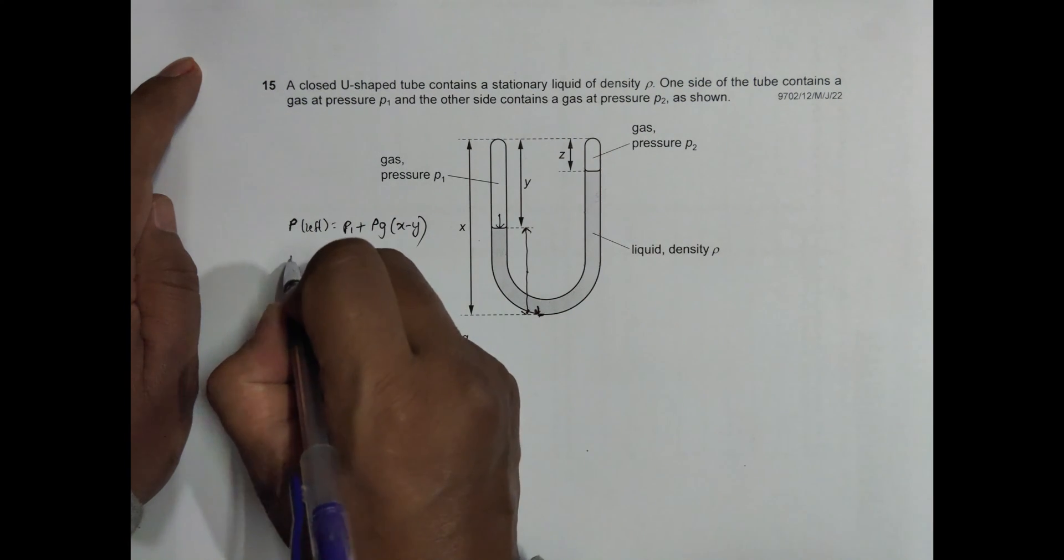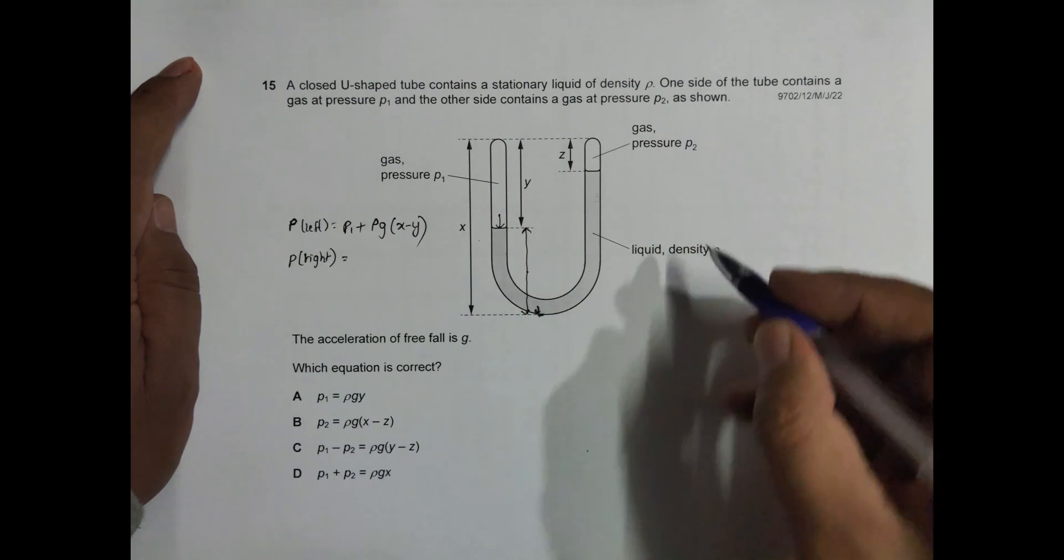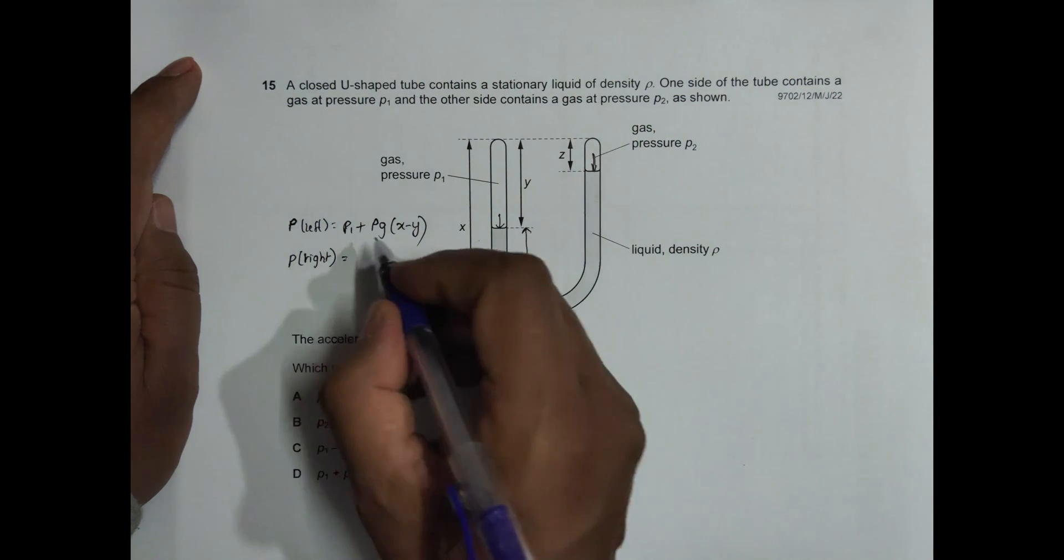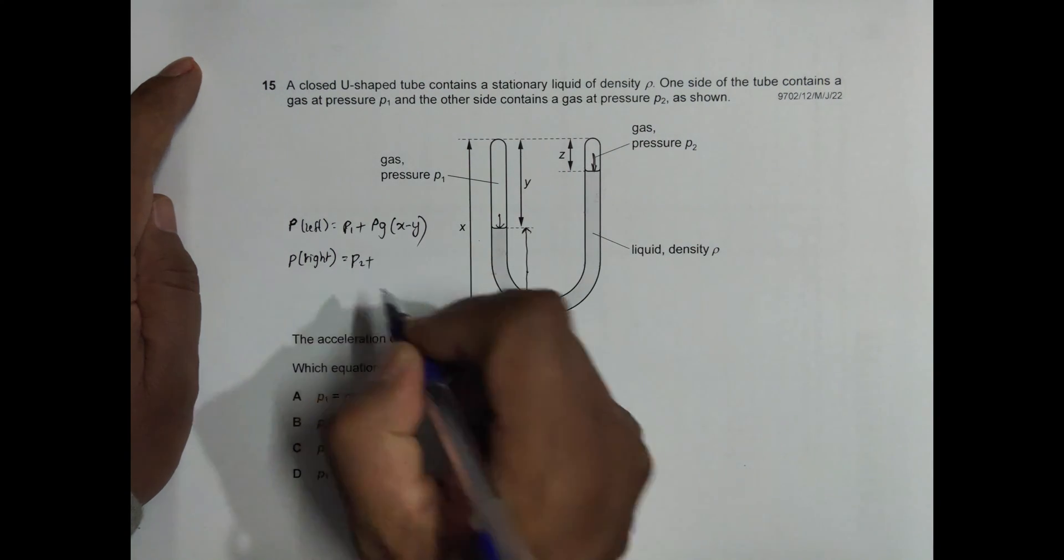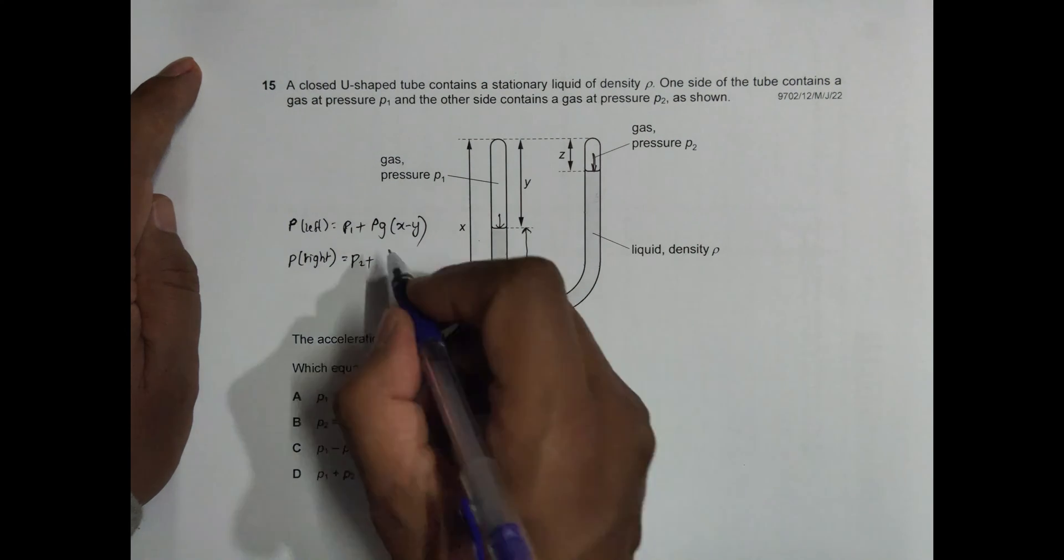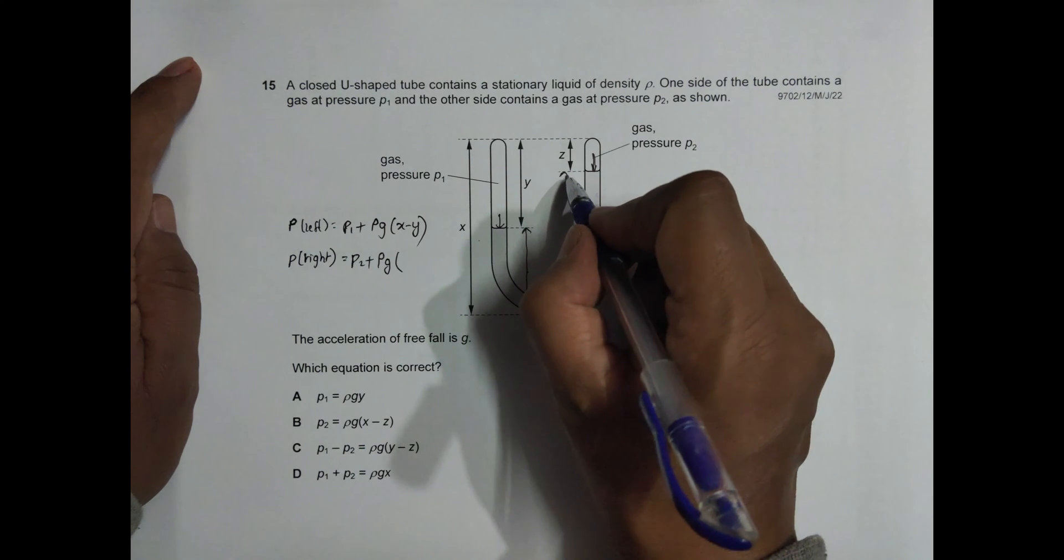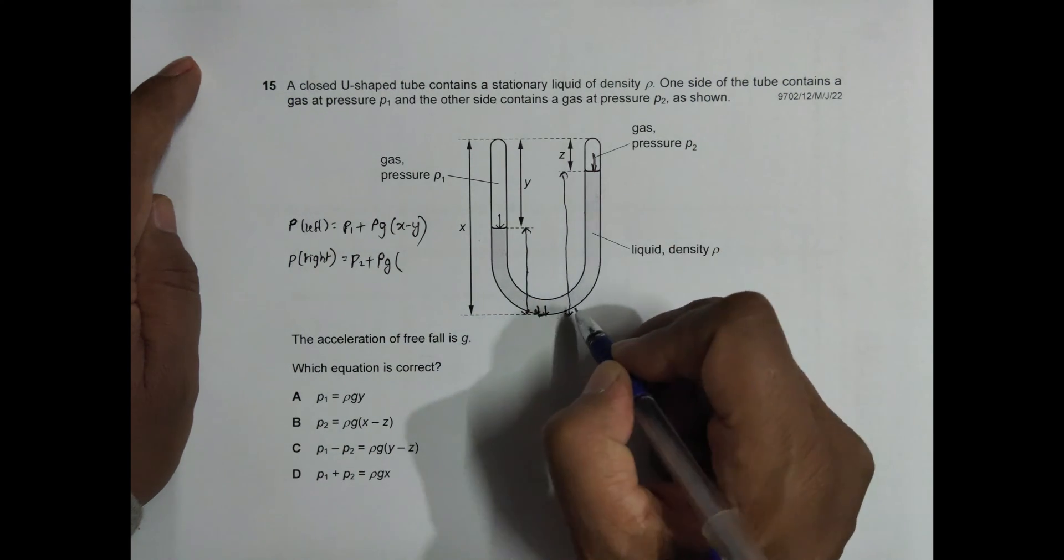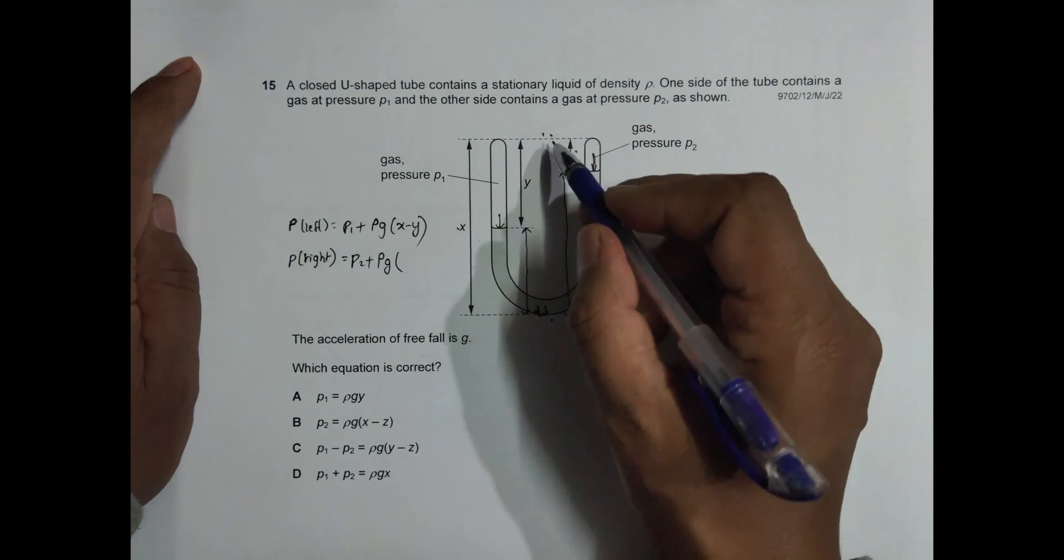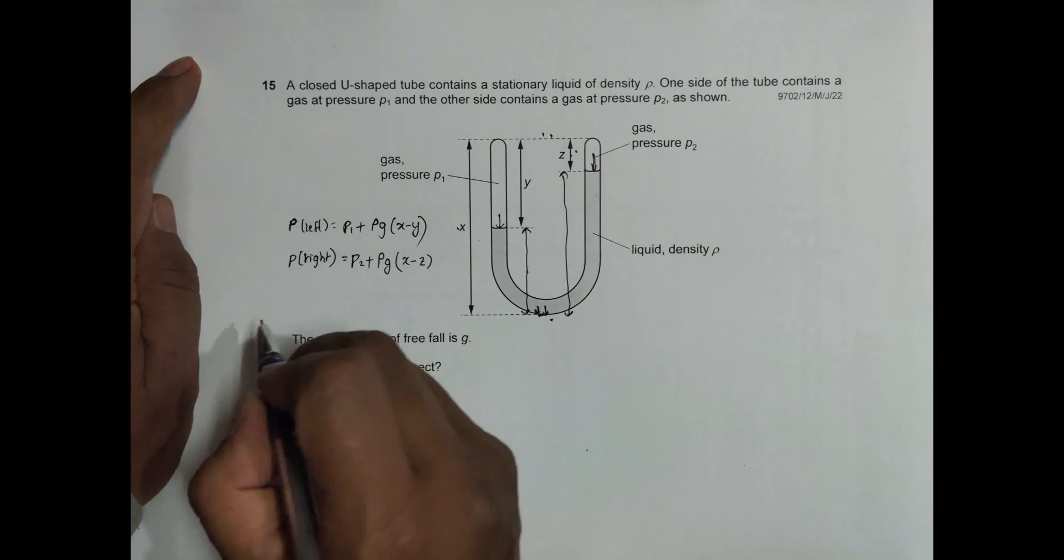Similarly, pressure right should be equal to the pressure due to this gas P2 plus the pressure from the right. So it should be ρg times this distance, and this distance should be equal to this whole minus z. This whole is x, so it should be x minus z.